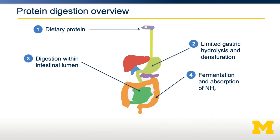The first place protein goes is the mouth, but not much digestion happens there. Where the action really starts is in the stomach, because of secretion of acids and the start of digestion. Once proteins move from the stomach to the small intestine, that's where the majority of digestion and absorption occurs. Any protein that is not digested and absorbed is then fermented by the gut microbiota and excreted. Because protein digestion and absorption capacity is low relative to both carbohydrates and fats — excluding, of course, fiber — this is more relevant for protein.